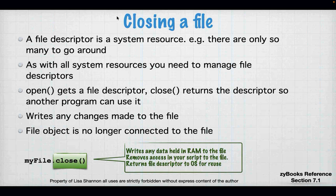File descriptor is a system resource — there's only so many to go around. You need to manage your file descriptors. Open gets you the file descriptor. Close returns the descriptor, but it also ensures there's no data left in that buffer — it makes sure any data you have has been written to the file properly. If you tried to use myFile after close, you would get an error.